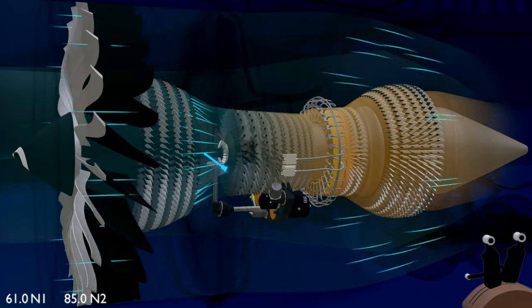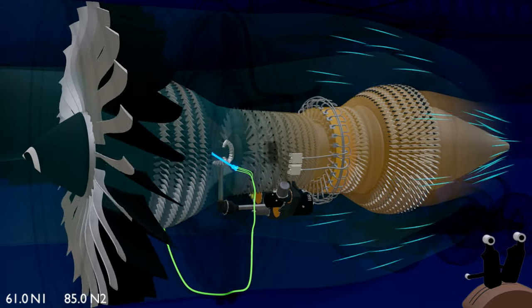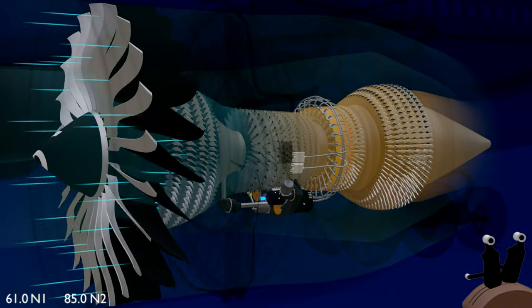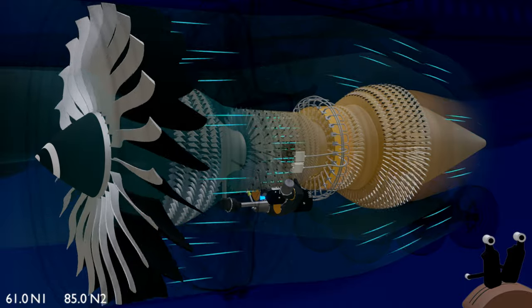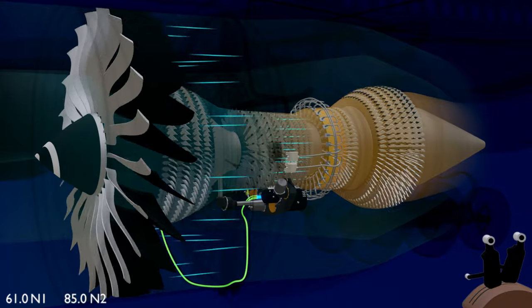The N1 Speed Sensor is located on the core case and directly measures the N1 shaft RPM. The N2 Speed Sensor measures the engine gearbox speed to determine the N2 RPM. As the gearbox is driven by the N2 shaft, their speed is directly proportional.